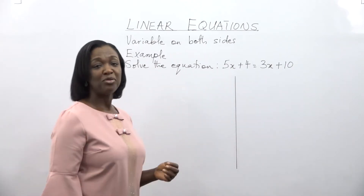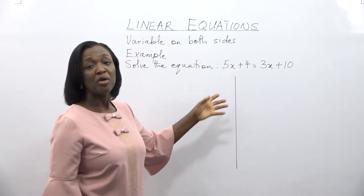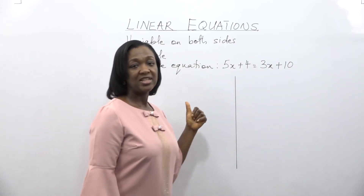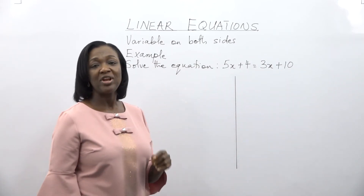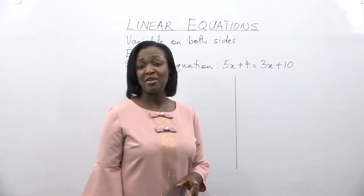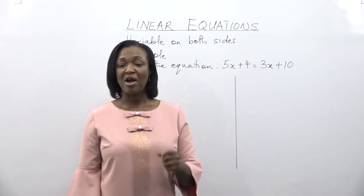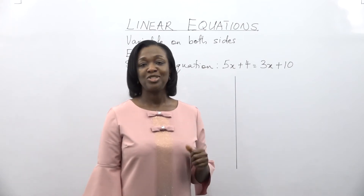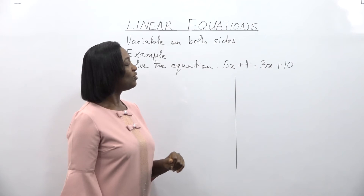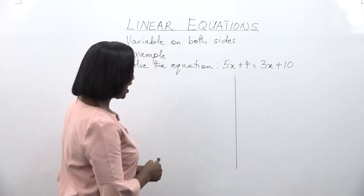In this example, we are going to solve an equation with the unknown on both sides of the equation. This lesson can be found in Brilliant Maths Module 3. If you don't have it, please subscribe at BrilliantMaths.com. Grab it and let's do this. Solve the equation 5x plus 4 is equal to 3x plus 10.